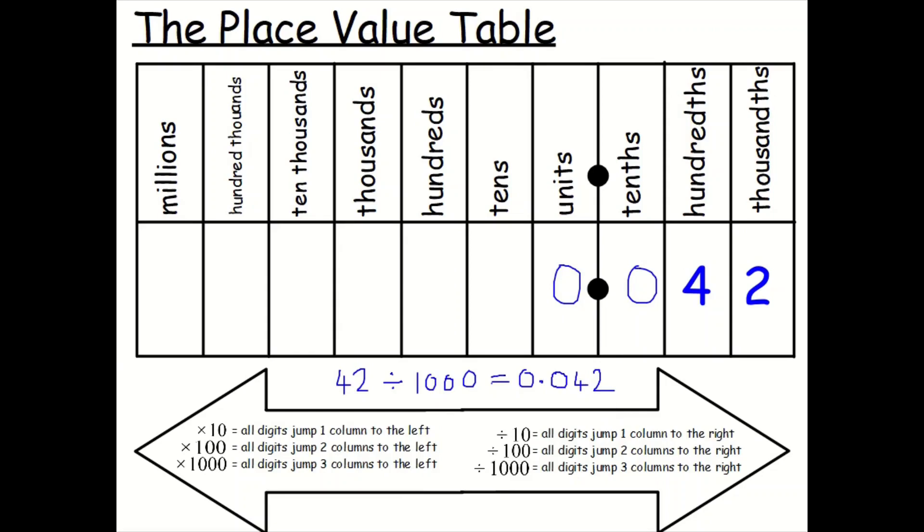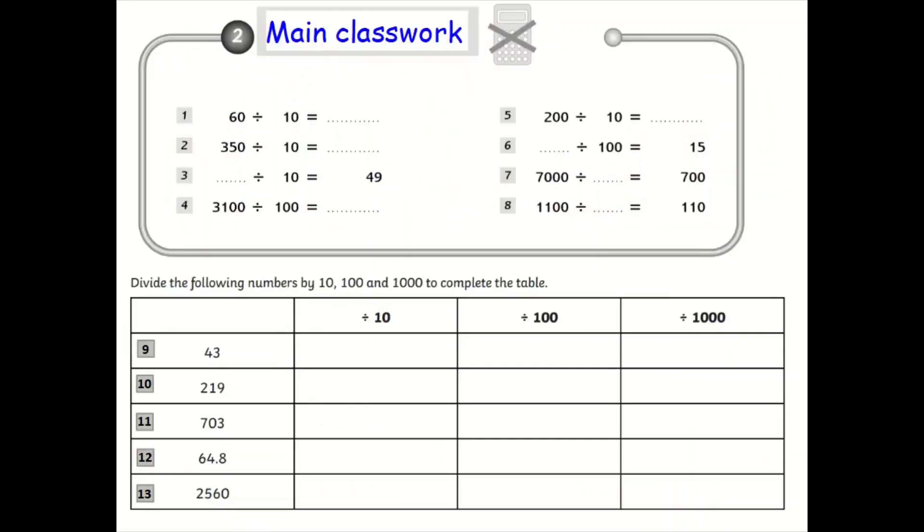Hopefully that has explained dividing by 10, 100, and 1000. I will take these away for you so you've got a clear place value table to work with on the independent exercise you're now going to do.